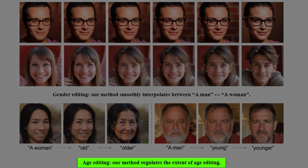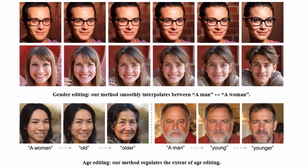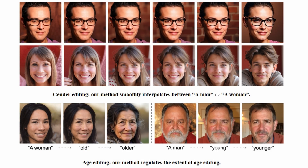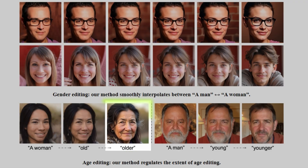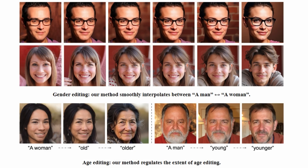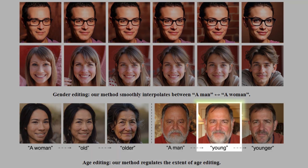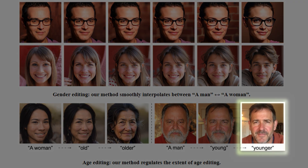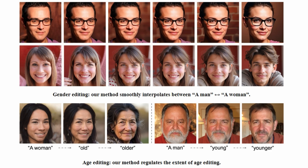You can also change age. For example, if the original photo is of a woman and you prompt it with old, here's what you get. If you prompt it with older, here's the result. Similarly, if you prompt it with young, you get a younger version, and if you prompt it with younger, the transformation is even more pronounced.